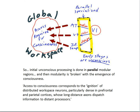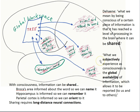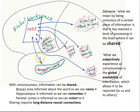The subject sees the word 'tree,' and if on a particular trial they become conscious of it, the tree is now represented in our working memory. Dehaene, Bernard Baars, and others argue that we can think of consciousness as involving this global workspace. What we mean by being conscious of a certain piece of information is that it has reached a level of processing in the brain where it can be shared — with long-distance axons going back to other areas. So the tree has made it up to this system in such a way that now that information can be broadcast to other specialized processors in the brain.